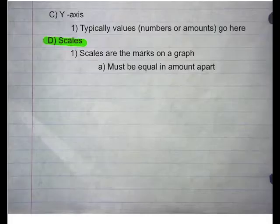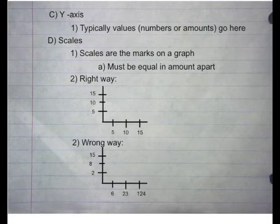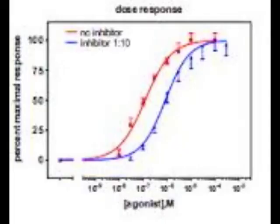Scales are the marks on the graph. They must be equal in amount apart. For example, the right way is by increments of 5. The wrong way is when random numbers are placed matching to the data points. Even if the points don't accurately match up with the scale, that's okay as long as the scale has an equal distance apart from each tick mark.